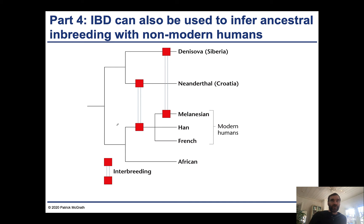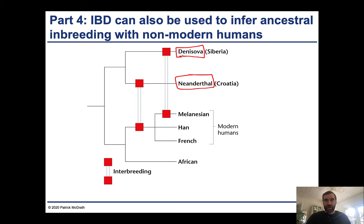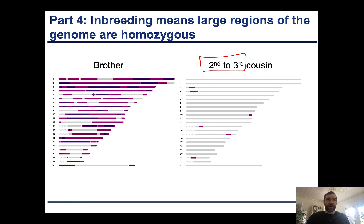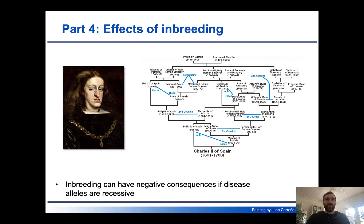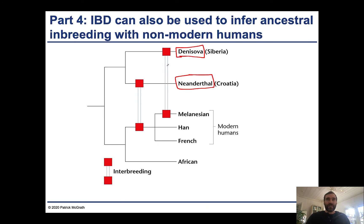IBD has also been very useful for studying ancestral inbreeding with non-modern humans. We have bone samples — shin bones, finger bones — from Neanderthals and Denisovans, two ancient hominids that preceded modern humans, and DNA was preserved in these samples. By examining the human DNA sequence, we can identify alleles that are linked together in such a way that you see them in Neanderthals but they're not common in humans. This was actually able to determine that modern humans, after they left Africa, must have had some inbreeding with Neanderthal populations as well as Denisovan populations.